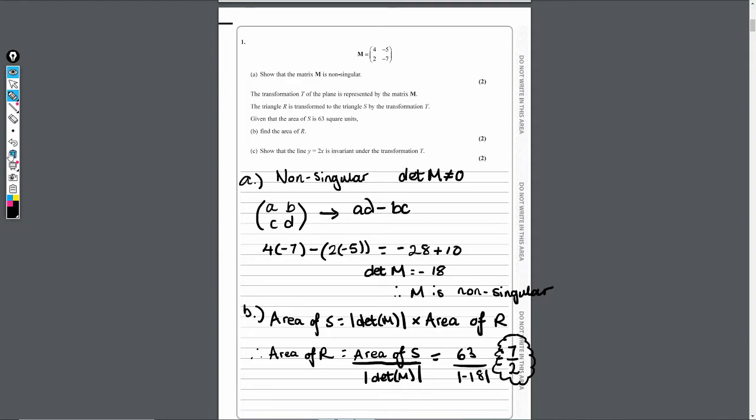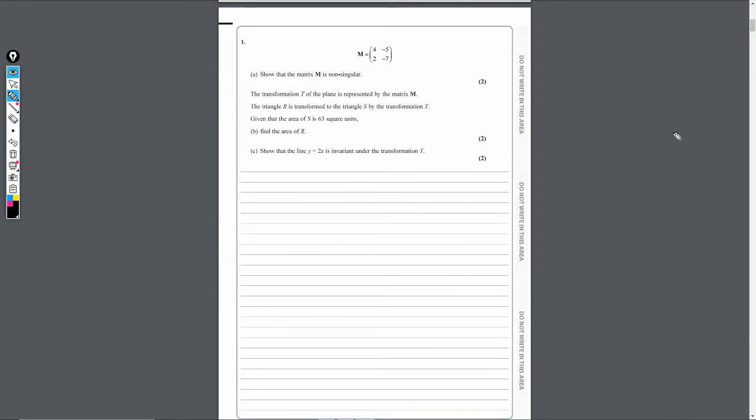And then finally, for part C, we just have to show that line Y equals 2X is invariant under the transformation T. So remember that an invariant line of a transformation, that would be one where every point on the line is mapped to a point on that same line. So what we've got here is Y equals 2X, so part C, Y equals 2X.